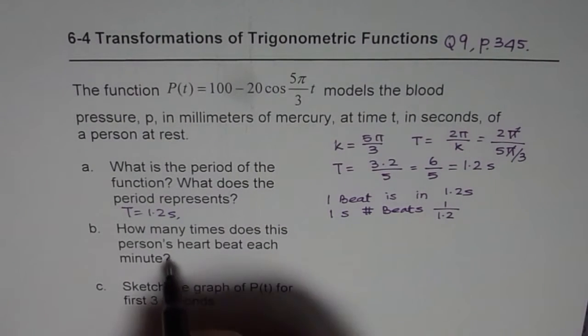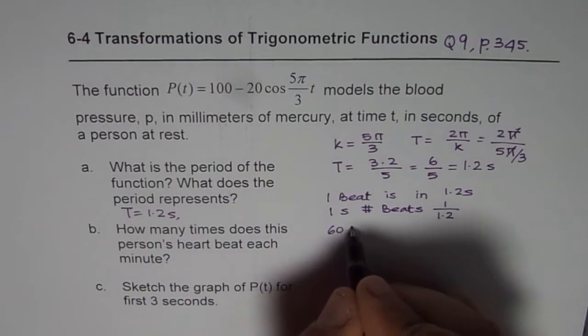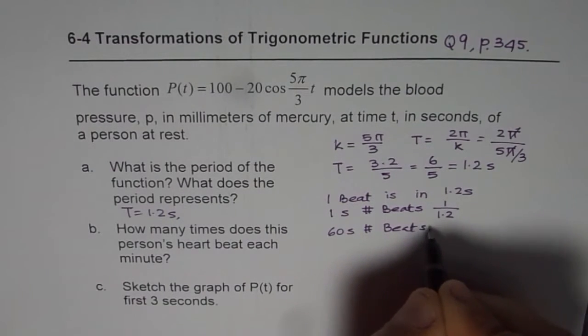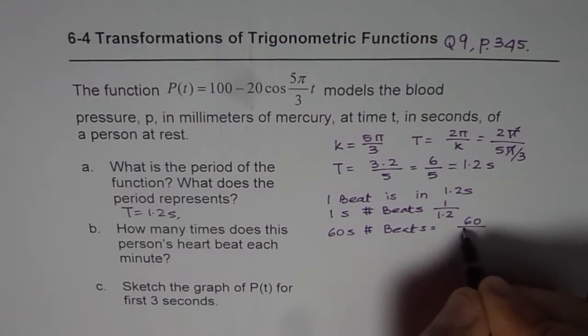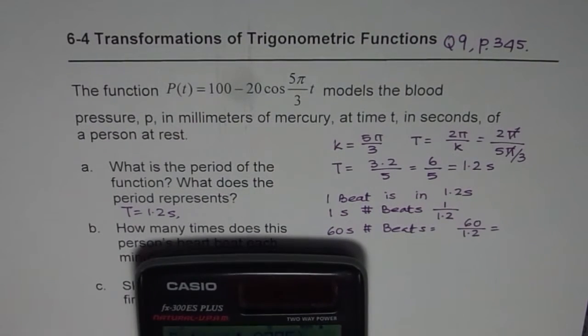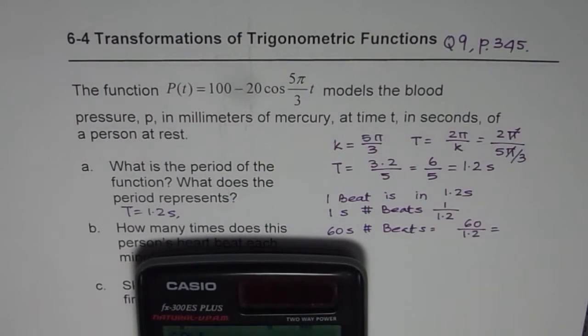In 60 seconds, number of beats will be 60 times 1 over 1.2. So that gives us the answer as 60 divided by 1.2, which is 50.